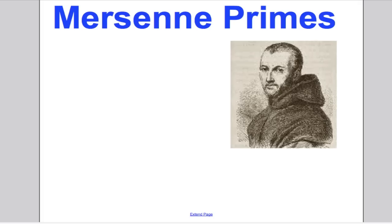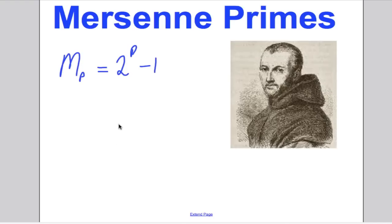If we consider a French monk that lived in the 17th century called Mersenne. Mersenne worked on what came to be known as Mersenne primes — a certain type of number that he thought was prime. The Mersenne prime M_p is 2 to the power of p subtract 1. It was thought that if p is prime, then M_p would be prime.